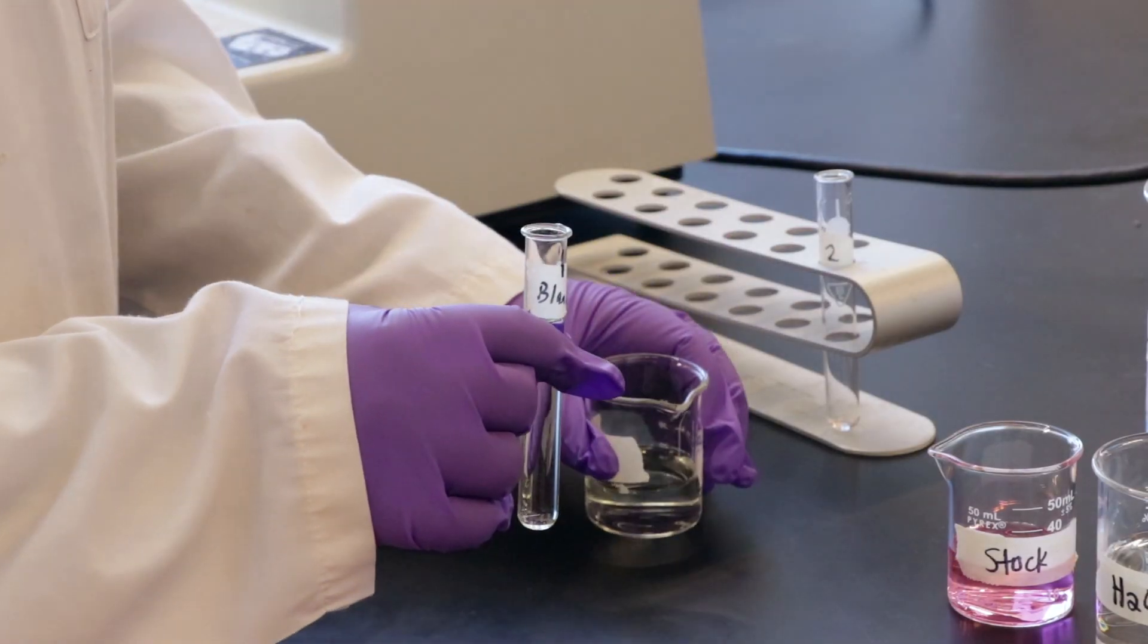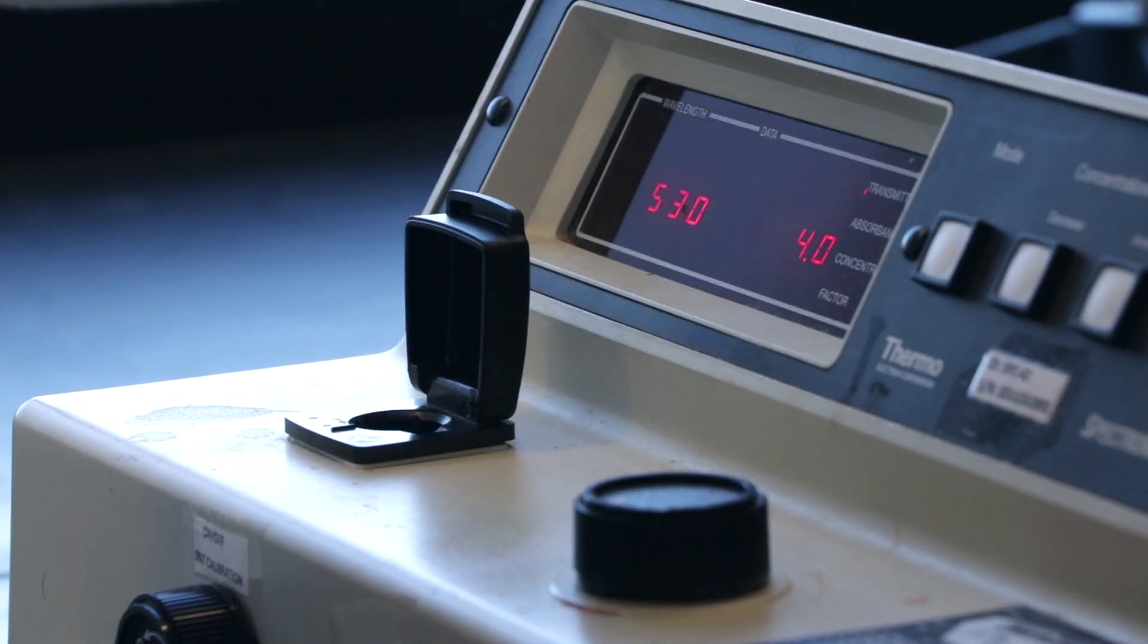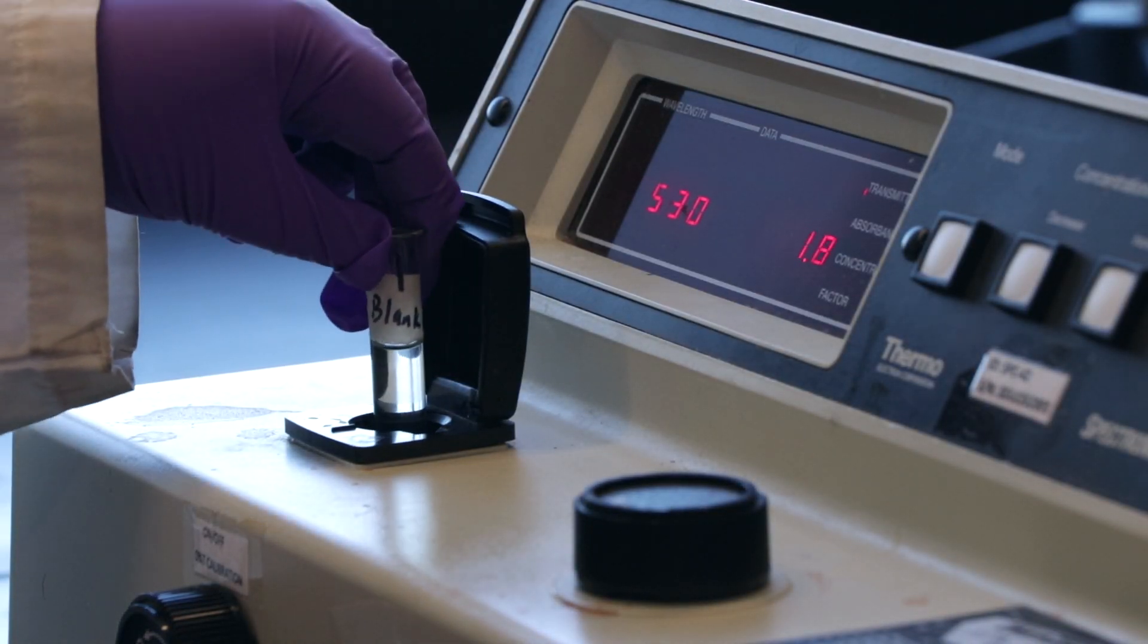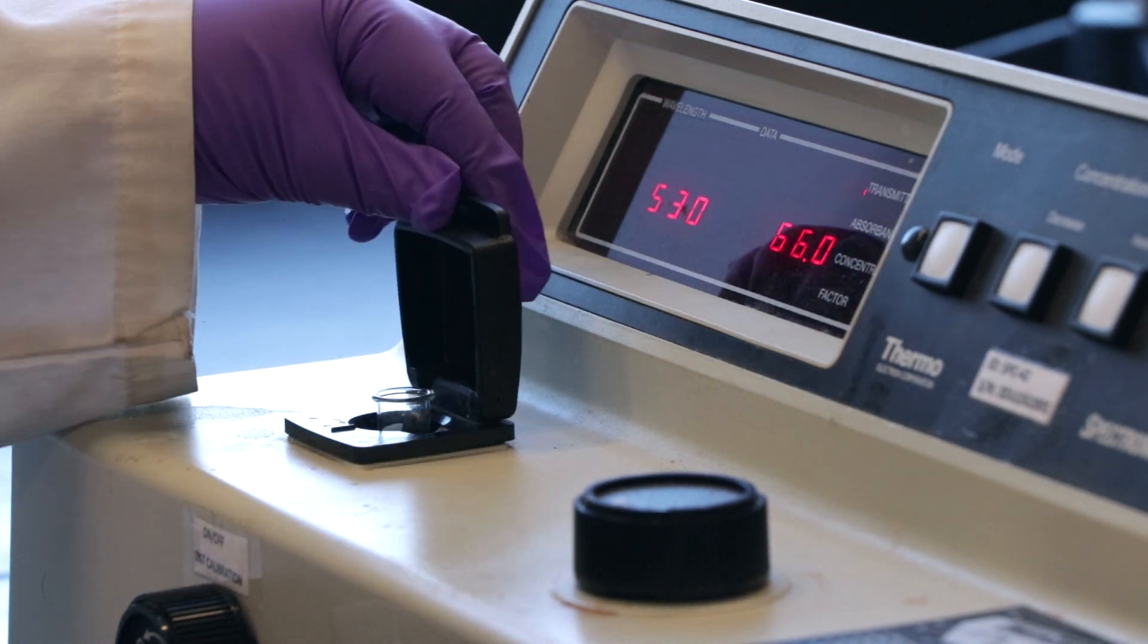Once again prepare your blank, but this time fill your cuvette with half water and half bleach. Insert the cuvette into the spectrometer and set the percent transmittance to 100%.